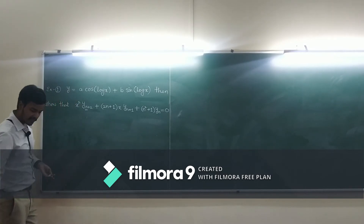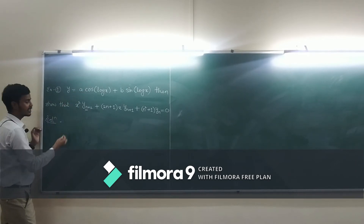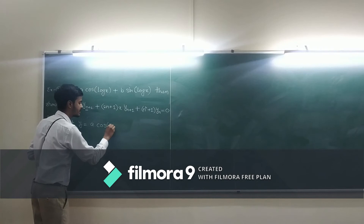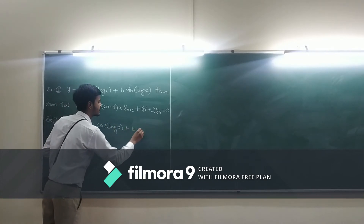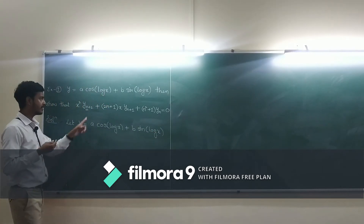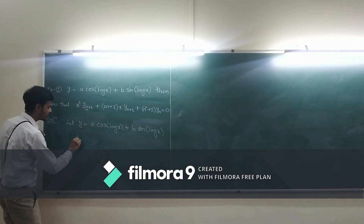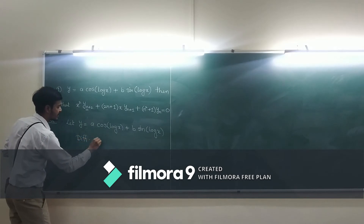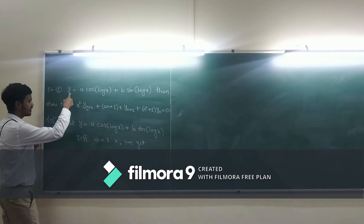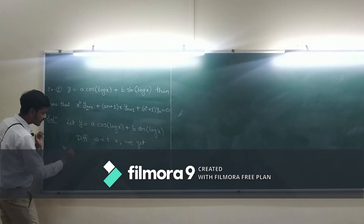Let us start with the solution. So y equals A cos(log x) plus B sin(log x). Now we need to find two derivatives directly, and the nth derivative will be given by Leibniz's Theorem. So let us differentiate with respect to x. Differentiating with respect to x we get y₁.